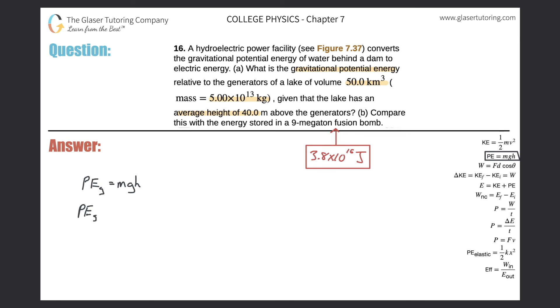So the potential energy, or the gravitational potential energy, should be equal to 5.00 times 10 to the 13, multiplied by the acceleration due to gravity, and then also times the height, right? That it is above a particular point. I said the ground before, which is generally the point of reference, but here they're saying 40 meters above the generators. All right? So just know that the height is relative. So we plug in our value of 40 there.